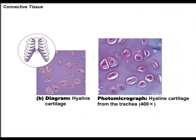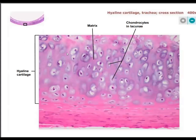The next one is hyaline cartilage. Hyaline cartilage has these big circles with a specialized cell inside each one, and the background is a baby pink, baby purple, or baby blue. Those baby colors clue you in that this is hyaline cartilage. The specific tissue name is hyaline cartilage and the big tissue category is connective.